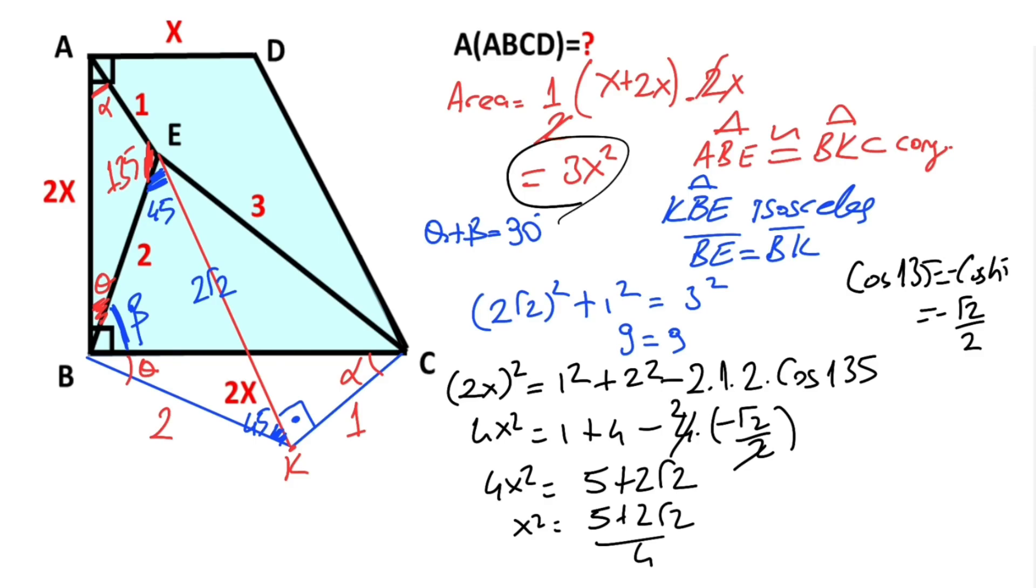We know that the area of the trapezoid equals 3x². So 3 times x² equals 3 times (5 plus 2 root 2) over 4. That means the area of the trapezoid equals (15 plus 6 root 2) over 4 square units.